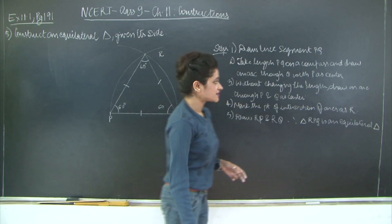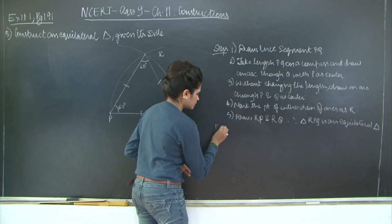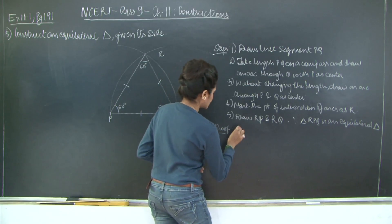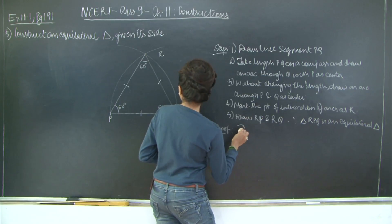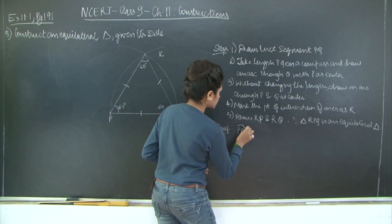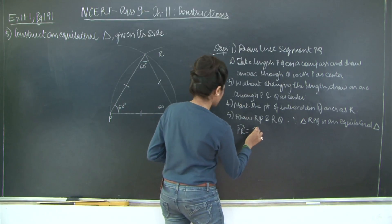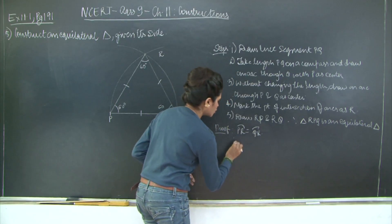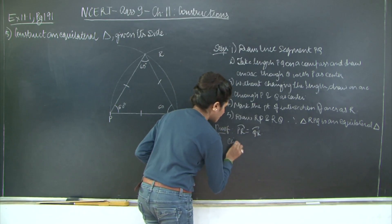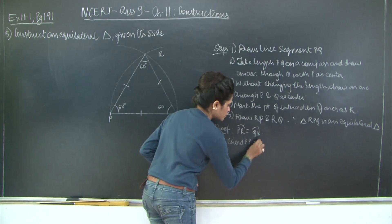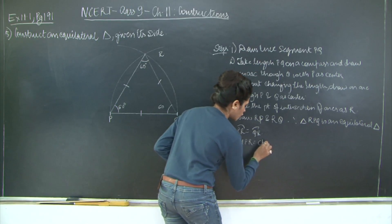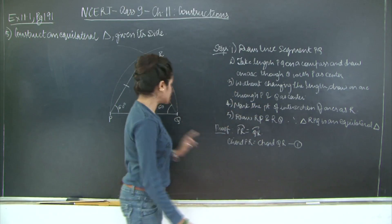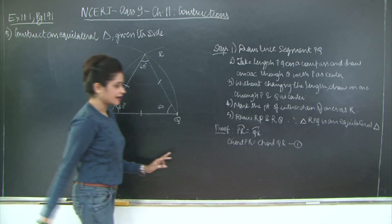And your proof is as follows. You have arc PR is equal to arc QR. Therefore chord PR is equal to chord QR. Let's mark this as equation 1. But you had PQ the same as QR.